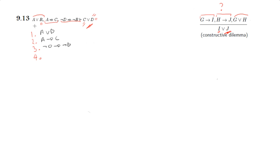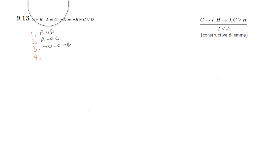...implies C. So let me construct this for you so you can see properly. Line one: A or B. Line two: A implies C. Line three: not D implies not B — by the way this is given data. Line four: I need to say B implies D, because this is H implies J — we need to prove this J, so H implies this J.